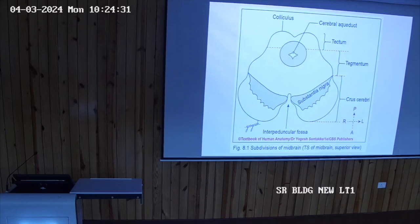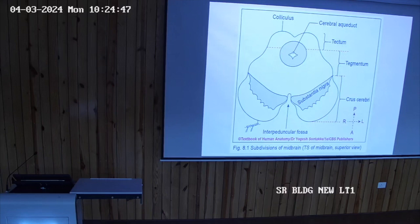To summarize: the midbrain is divided into two — anteriorly the cerebral peduncle and posteriorly the tectum. The cerebral peduncle is divided into three parts: most anteriorly the crus cerebri, then substantia nigra, then tegmentum.